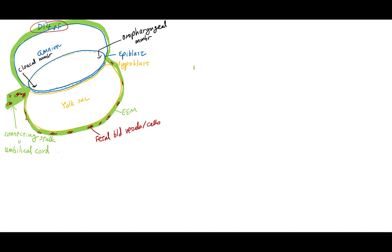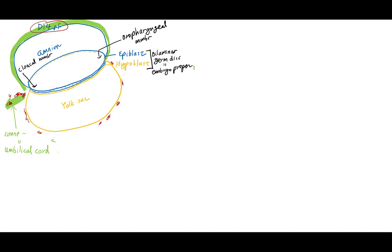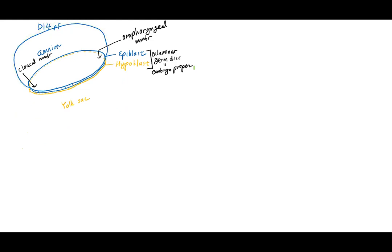The focus of our discussion in this tutorial is on the epiblast and hypoblast transformation — the bilaminar germ disc, also known as the embryo proper. Transitioning from day 14 to day 15, something interesting happens in the epiblast cell layer just in front of the cloacal membrane, where the epiblast cells form a raised ridge. Let's take a cross section through this longitudinal ridge and see what is happening.